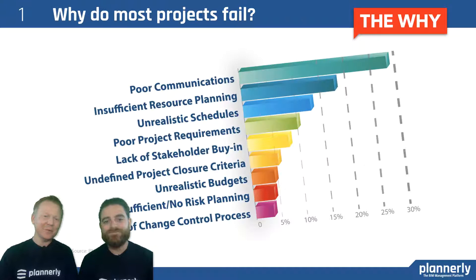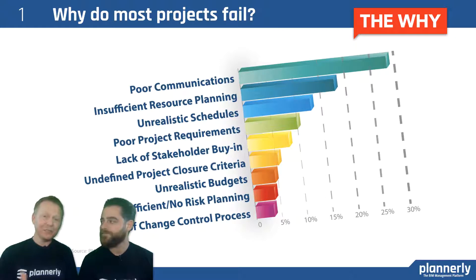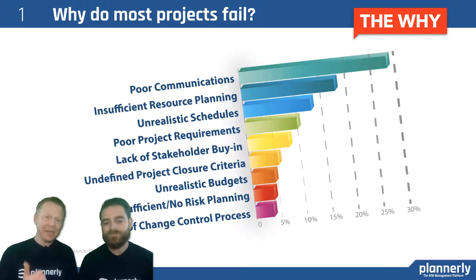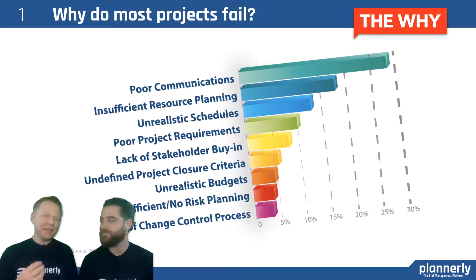We see some statistics here from PMI. They say that mostly the reason for failure on a project is poor communication, insufficient resource planning, and unrealistic expectations. Those are the top three, and they're all related to things that we can plan for.